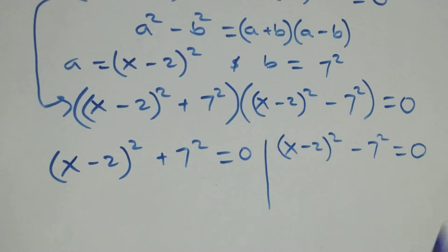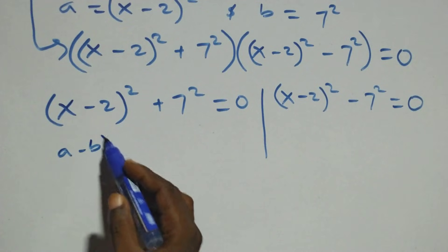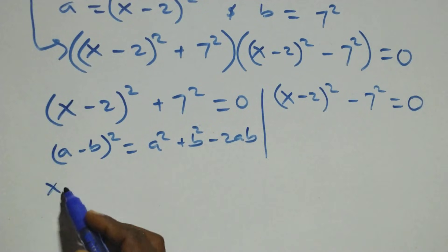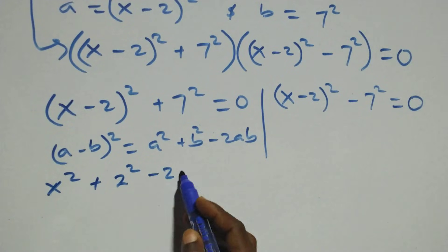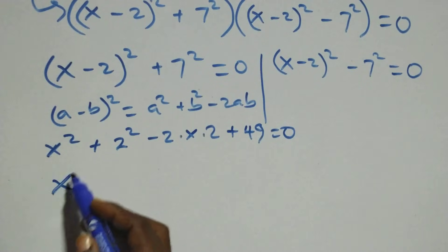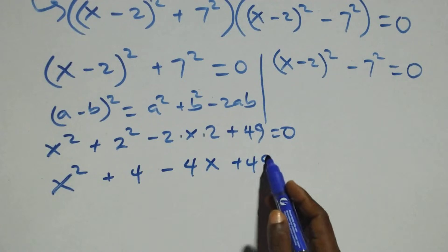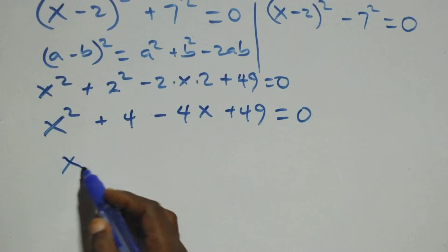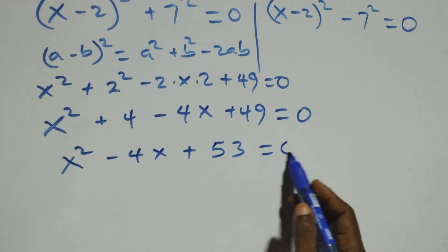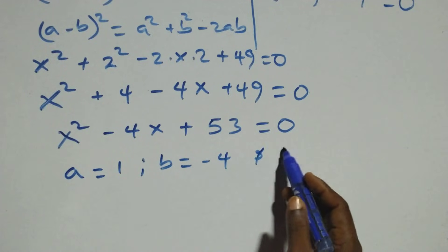Solving case one, we expand (x minus 2)² using the identity (a minus b)² equals a² + b² minus 2ab. This gives x² + 4 minus 4x plus 49 equals zero, which rearranges to x² minus 4x plus 53 equals zero. Here a equals 1, b equals minus 4, and c equals 53.